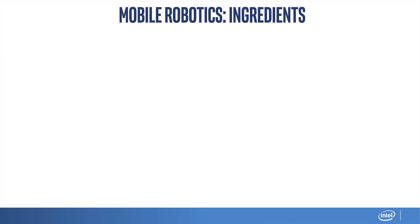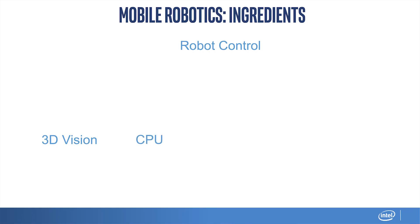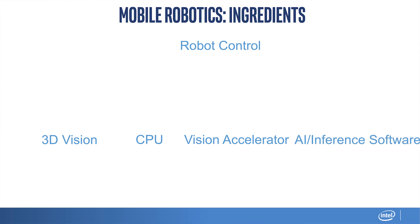For those of you who are building robots, if you want to build the best products, you start with the best ingredients. I wanted to talk about some of the ingredients that go into robots today. We start off with robot control — this is software control of your robot, and every robot will need some control. If you want an autonomous robot, you'll need some sort of 3D vision. Of course, you'll need a CPU. A lot of robot builders today are looking to add vision accelerators and AI inference software to their robotics packages.